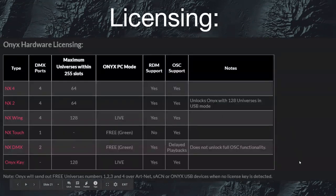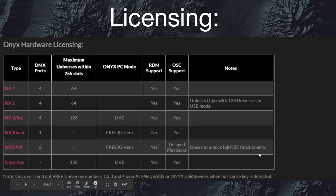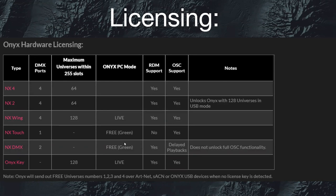Licensing-wise, there's a chart on support.obsidiancontrol.com. The NX4 has 4 DMX exports and 64 universes, same with the NX2. The biggest thing to note is OSC support is enabled in the NX Touch, the Wing, and the consoles, as well as the key. The NX DMX does not unlock that full OSC functionality. The NX Touch and NX DMX, when connected, put you in PC mode free — meaning you can use universes 1 through 4 only.